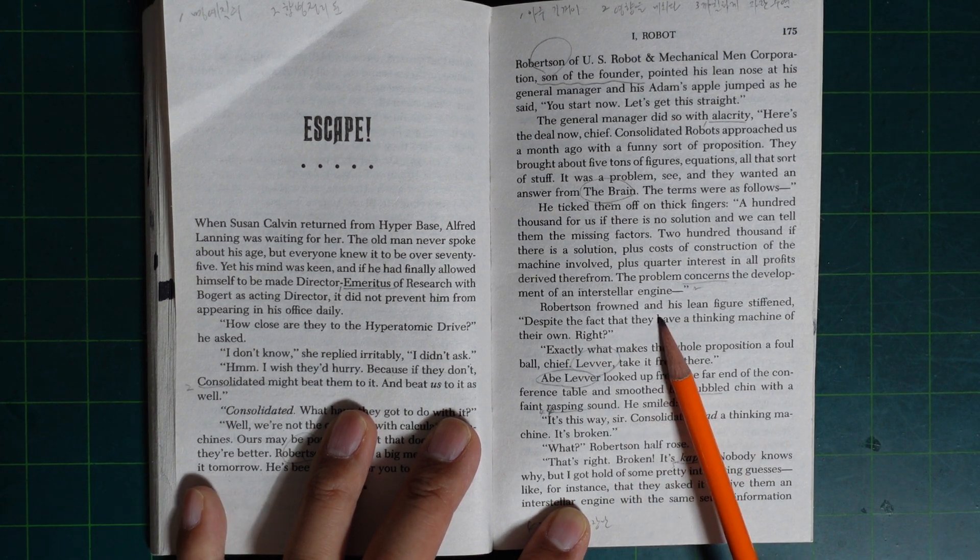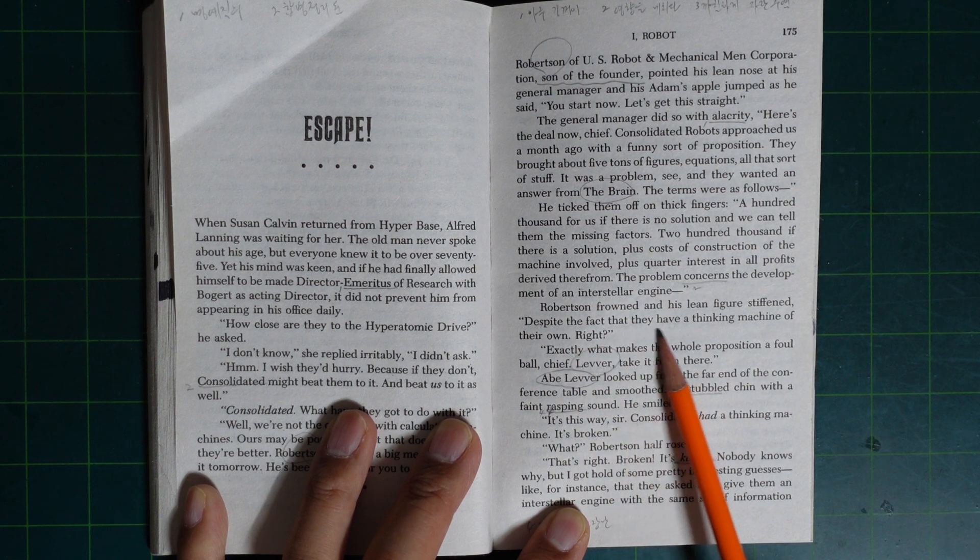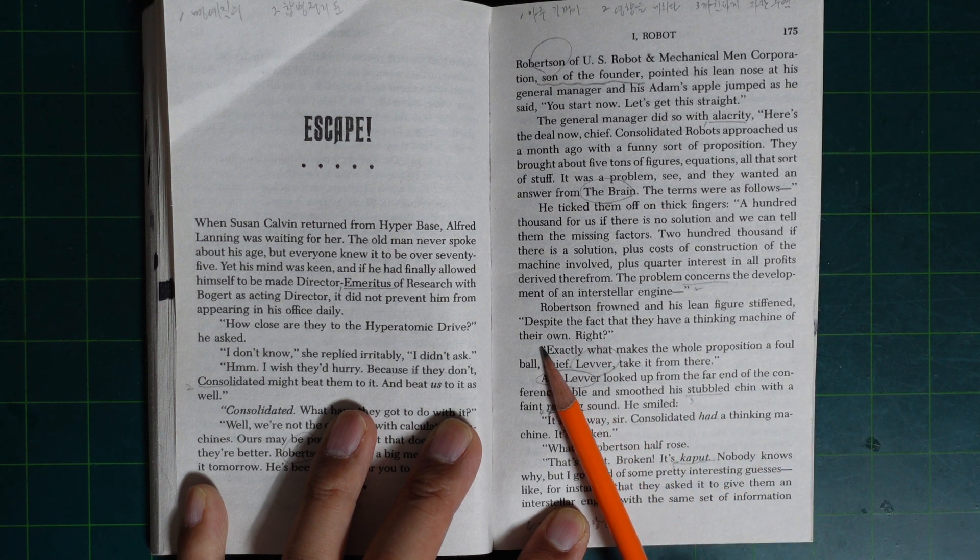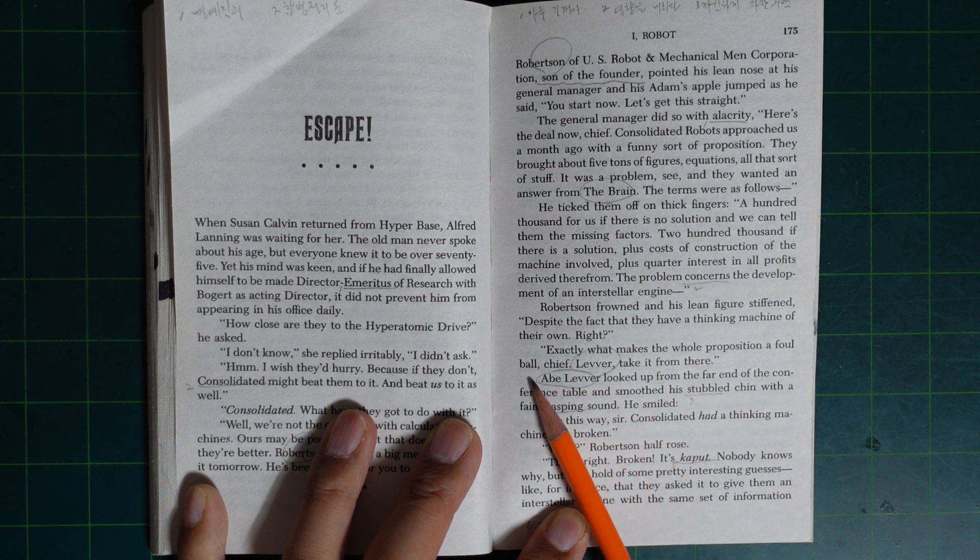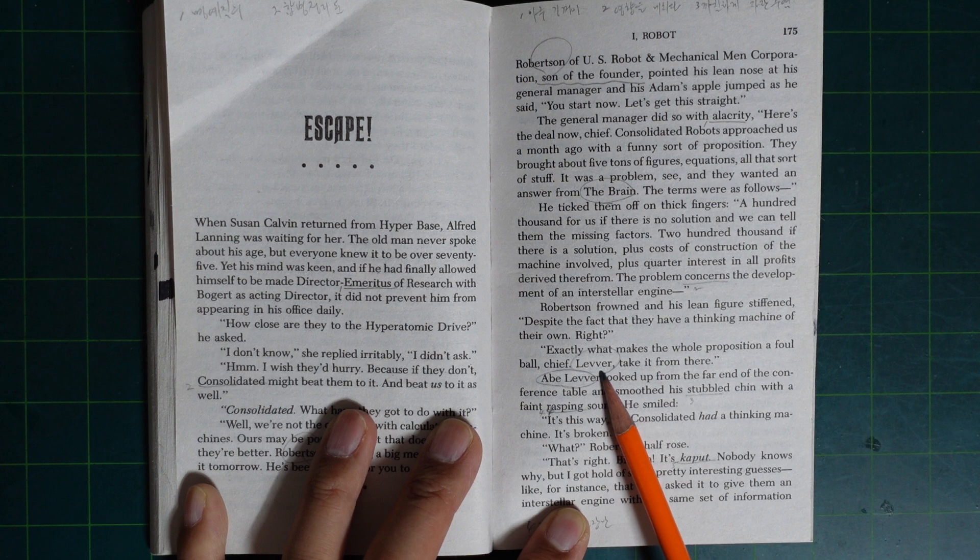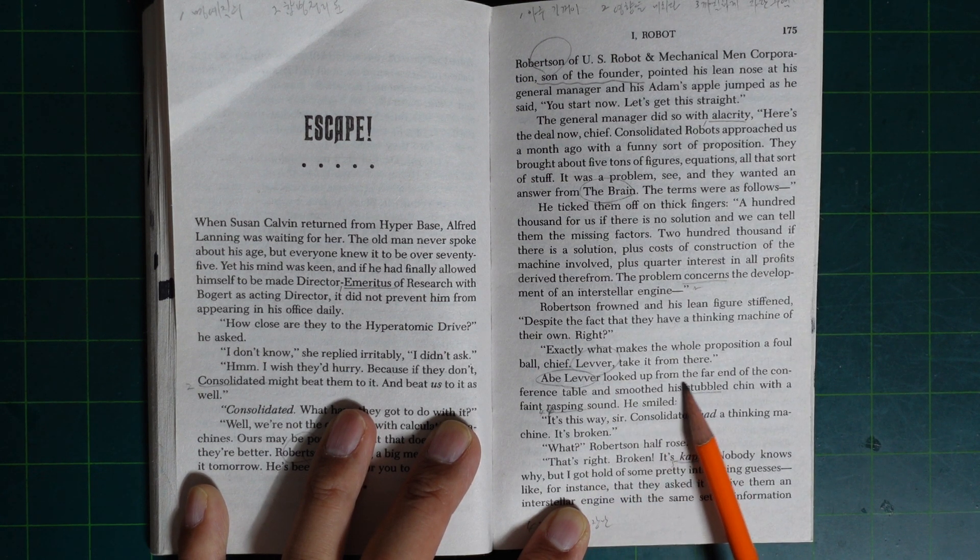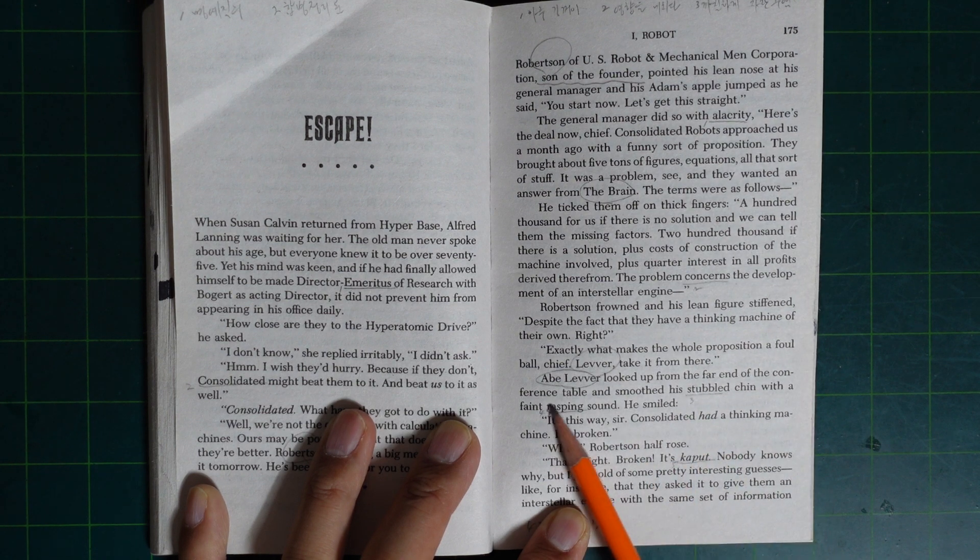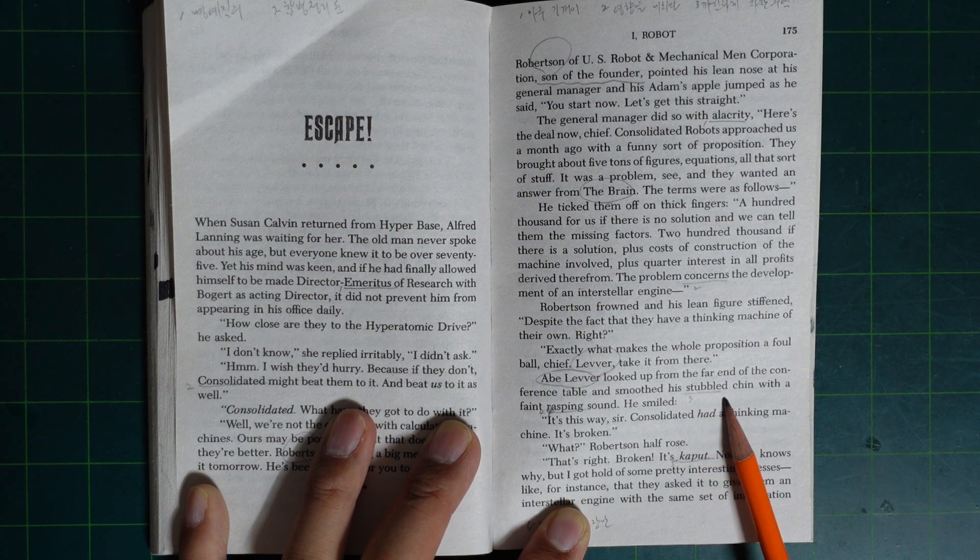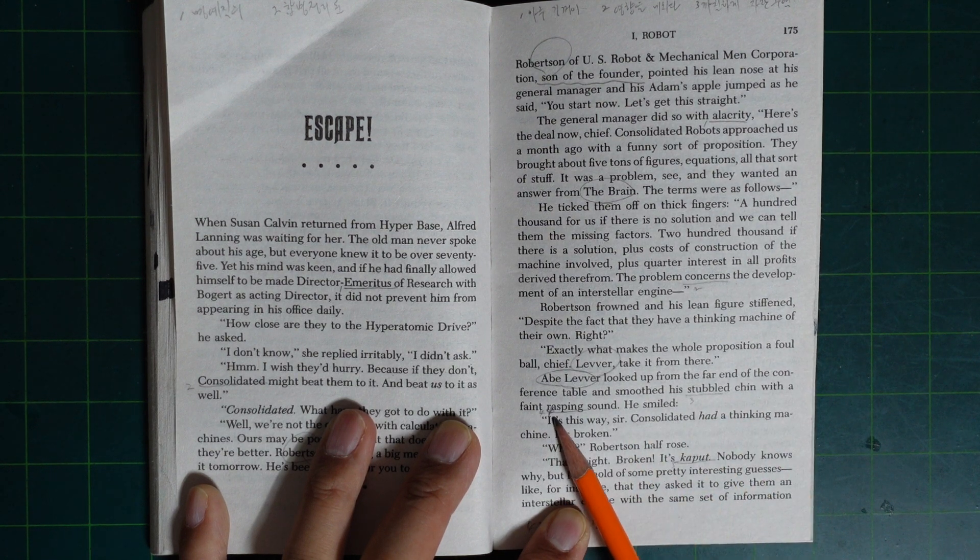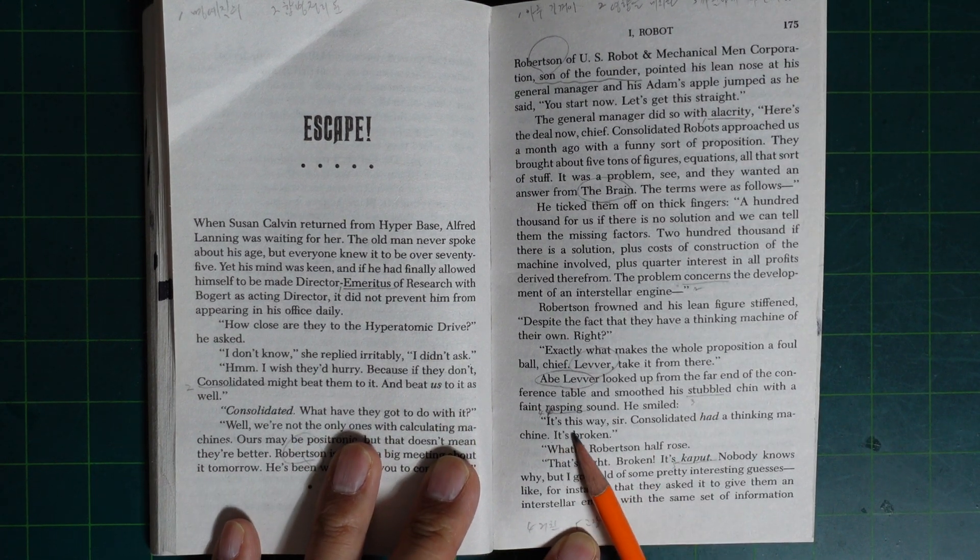The problem concerned the development of an interstellar engine. Robertson frowned, and his lean figure stiffened. Despite the fact that they have a thinking machine of their own, right? Exactly. What makes the whole proposition a foul ball. Leavitt, take it from there. He looked up from the far end of the conference table and smoothed his stubbled chin with a faint rasping sound. He smiled. It's this way.